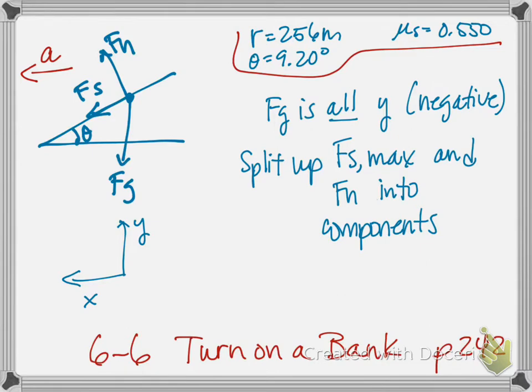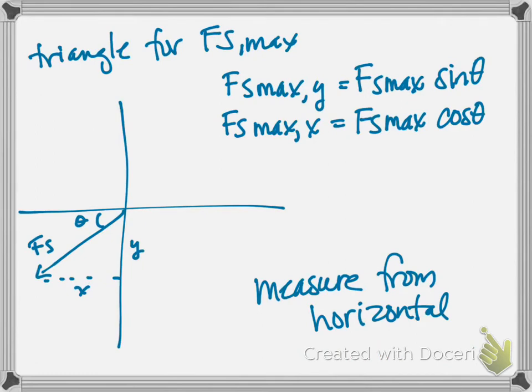Now to break up FS max and the normal force into components, I've got triangles drawn on the next couple pages. Here's the triangle for FS max. I've got this is sort of a third quadrant vector, if you will, back from the free body diagram. So I've got it drawn here. The angle is with the horizontal here. So the x and y components of FS max are going to go along with sine and cosine as we're used to seeing them. So FS max in the y direction or the y component is FS max sine theta and the x component is FS max cosine theta because we're measuring from the horizontal. So make a note of that.